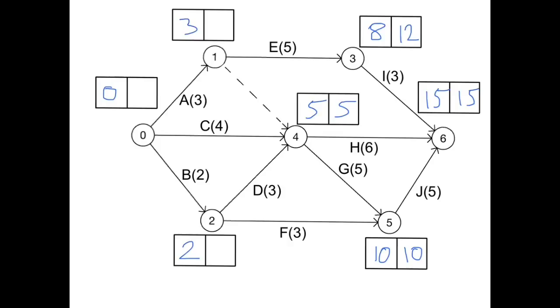So by that argument, to work out the latest time for event 2, we could do 10 take away 3, giving us 7, or 5 take away 3, giving us 2. And that's the minimum value we want, so our latest time there is going to be 2. For event 1, 12 take away 5 is 7, however 5 take away 0 is 5, and we're looking for the lowest, so the latest time we could start from that point is at 5.